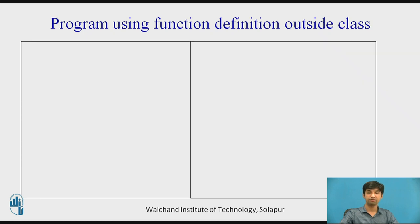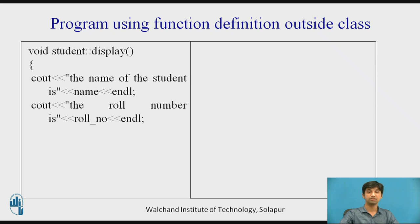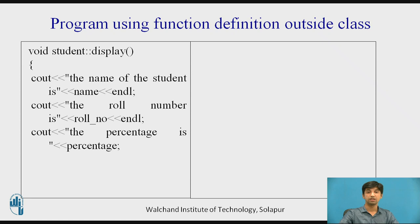Now I define one more function — the display function. Again, the return type, class name, scope resolution operator, and function name. I display it using cout. Cout with insertion operator displays 'The name of the student is' followed by the variable name, then endl to terminate the line. Then cout displays 'The roll number is' followed by roll_number, then endl. Then cout displays 'The percentage is' followed by that variable. Then I end this function.